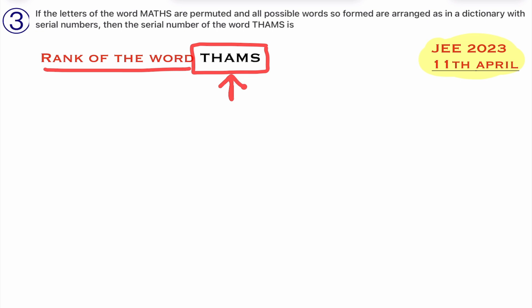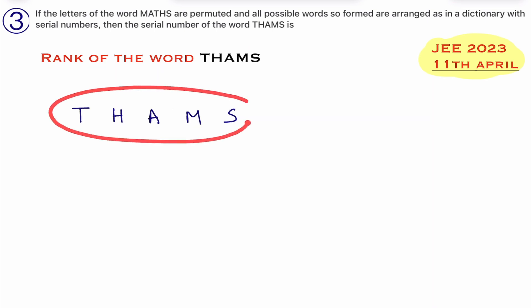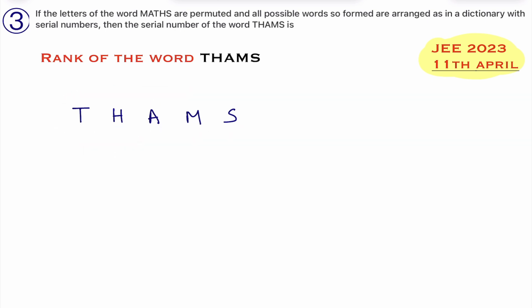To find the rank of a word we have one particular procedure, but we will do this problem with the help of a shortcut. First, give numbers to these letters as per alphabetical order. For example, A comes first in alphabetical order so give 1 to A. Then A B C D E F G H — H is at position 2. Continuing: I J K L M N O P Q R S — S is 4, T is 5.